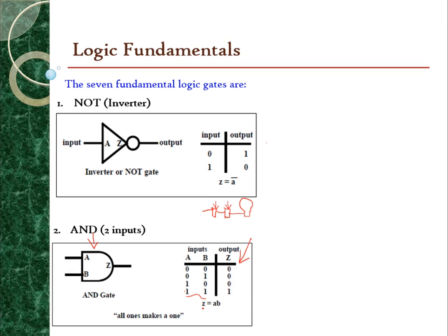This is how you write the AND gate formula: either A·B, A∧B, or A·B. The output Z will be true only if both inputs A and B are true. If either one of the inputs is not true, then the Z output will be false or zero.